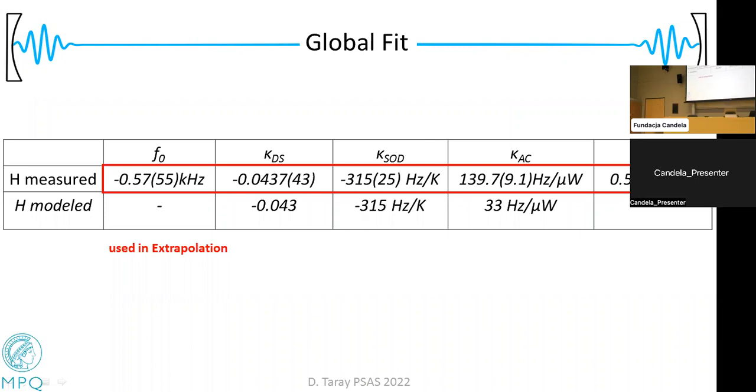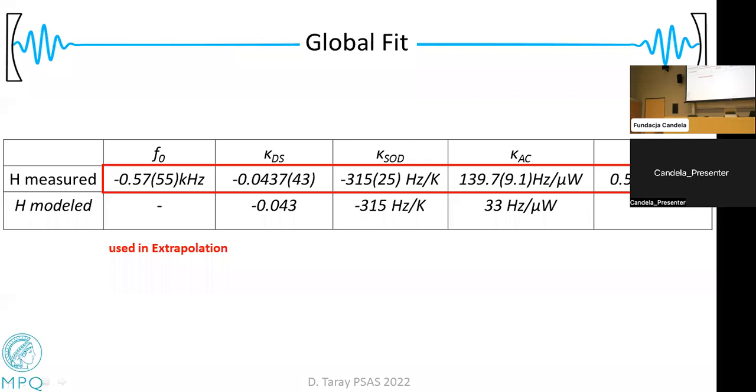In the global fit, when we correct the central frequencies, we of course use the experimentally found values. So whatever the effect is that causes this discrepancy, we think that we have it under control or it is taken care of by this global fit. But it would be intellectually nice to understand why this effect, why the AC Stark shift, is so much bigger in our measurement. This is what we are currently looking into.